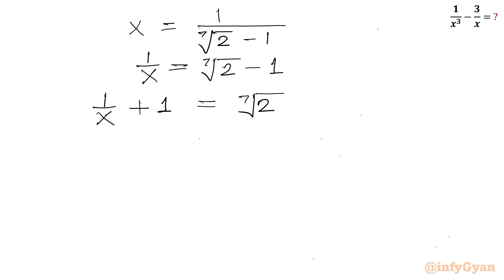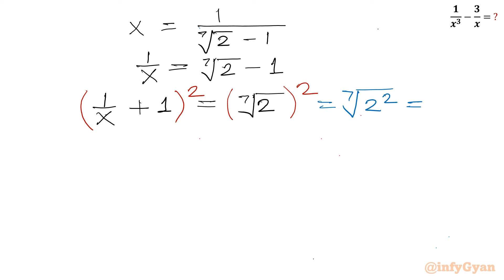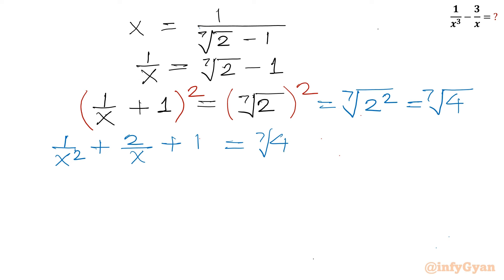Now I will consider squaring both sides. So (1/x + 1)² = (⁷√2)², which equals the 7th root of 4. Expanding the left-hand side using the (a+b)² formula: 1/x² plus 2/x plus 1 equals ⁷√4. Taking away 1 from both sides: 1/x² plus 2/x equals ⁷√4 minus 1. Let us call this equation number 1.